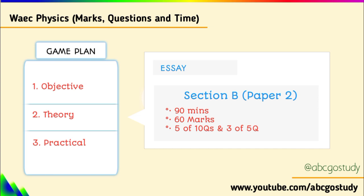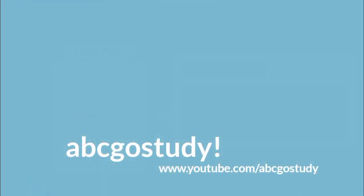So, in that theory paper the total is 60 marks. To summarize: objective, the general mark is 50, while for theory, the general mark is 60 marks.